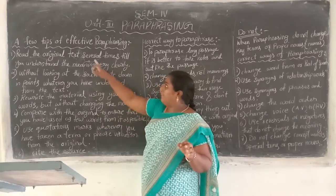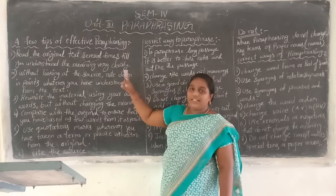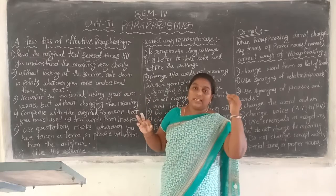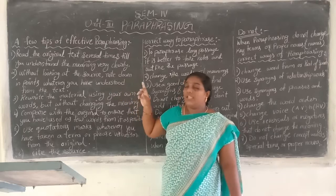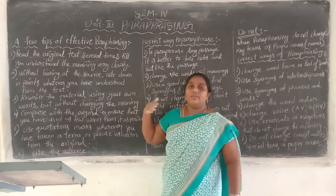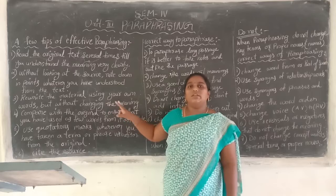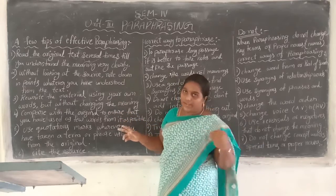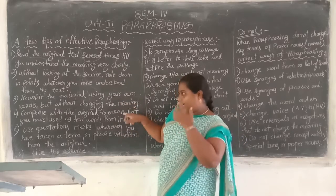So, the fourth tip of effective paraphrasing — we have already learned the three tips. First tip: read the paragraph several times until you have a clear idea. Second tip: without looking at the source, note down the points of whatever you understood from the reading. Third tip: rewrite the text without changing the meaning. Now the fourth one is coming up.